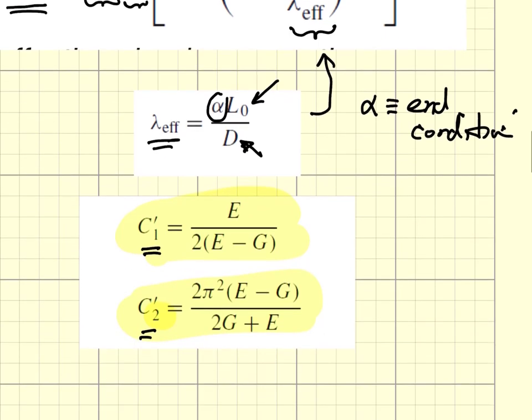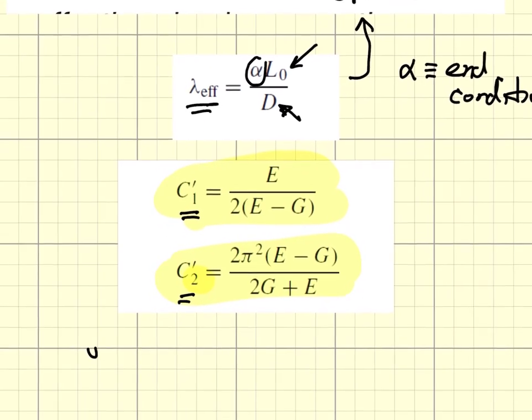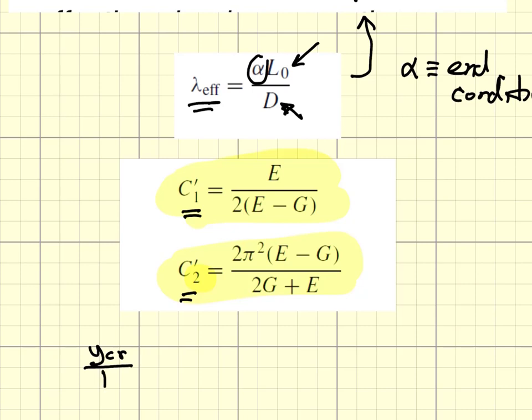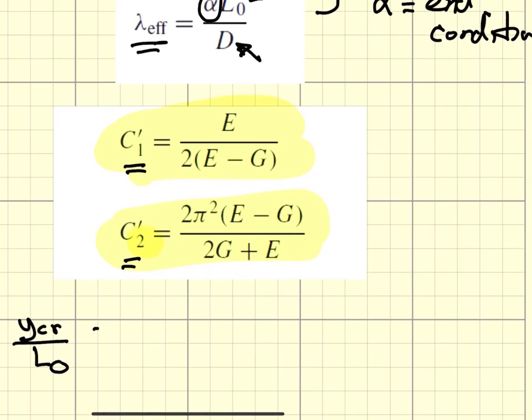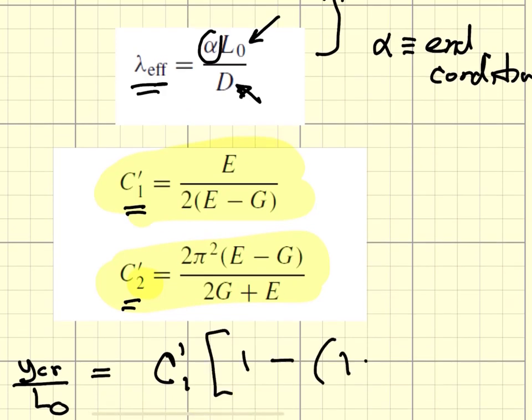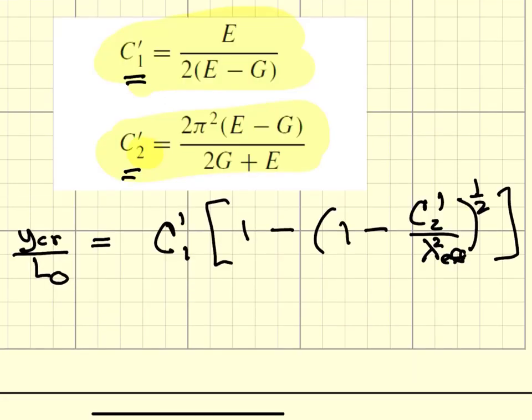We can create really nice buckling maps if we take this critical displacement and divide it by L0, the free length. That becomes equal to C1' times 1 minus (1 minus C2' over the square of the effective slenderness ratio) raised to the one-half power. We can plot Y-critical divided by L0 against this effective length and come up with maps that separate safe elastic loading from the buckling state.